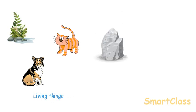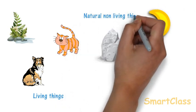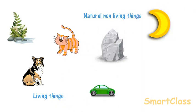There are also large numbers of non-living things like rocks and the moon, which are natural non-living things, while cars, televisions, and mobiles are man-made non-living things.